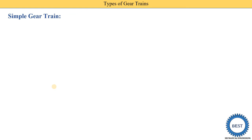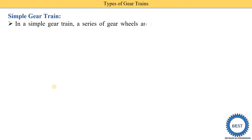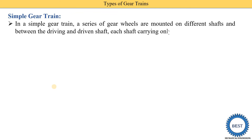The first one is a simple gear train. From the name, we can understand it is a simple type. In a simple gear train, on one shaft, only one gear is installed. In a compound gear train, on one shaft, two gears are installed. So there is a slight difference in all the types. In a simple gear train, a series of gears are mounted on different shafts.